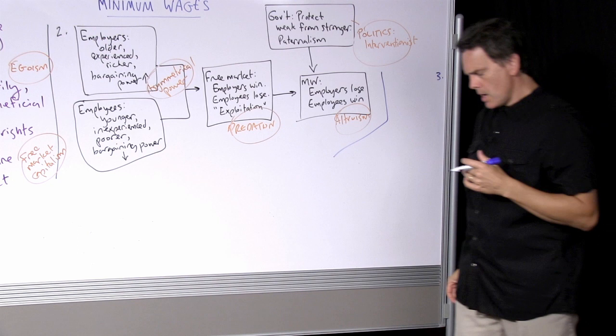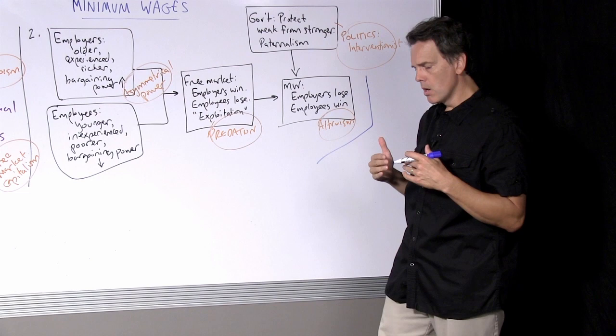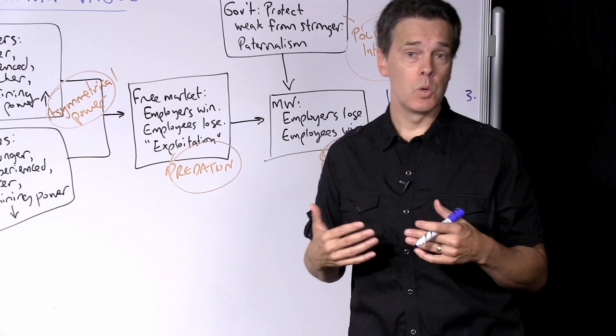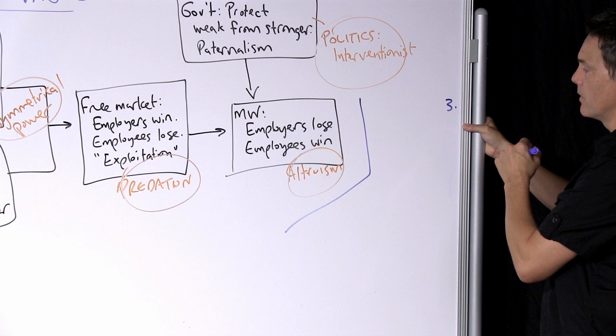This side will say, as a matter of counter-argument, that if we have a minimum wage, it might be justified positively by arguments like this, but there are unintended long-term consequences of minimum wages that must be taken into account. This position will argue that those long-term unintended consequences are negative, and so they militate against the advocacy of a minimum wage.